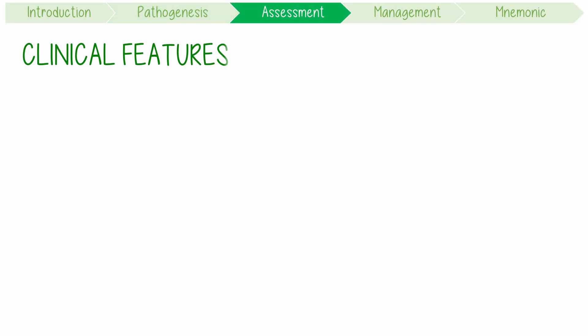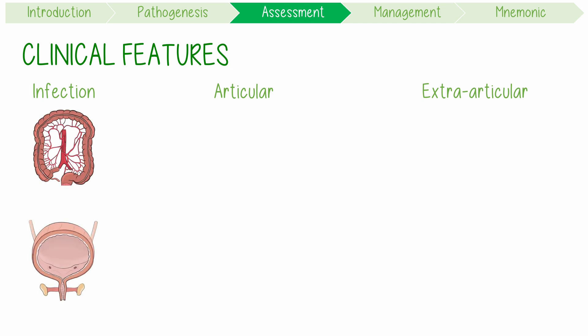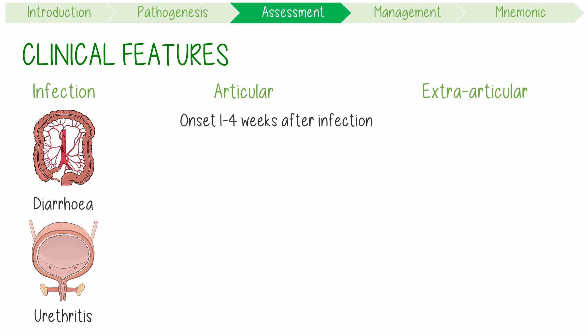The clinical features of reactive arthritis should be classified into those associated with the preceding infection, articular, and extraarticular features. The preceding infection is usually from an enteric or genitourinary source, which often means patients have a recent history of diarrhea or urethritis. The onset of joint pain is typically one to four weeks after infection.